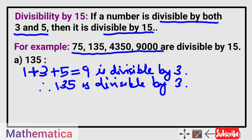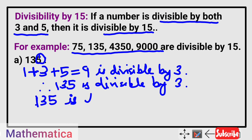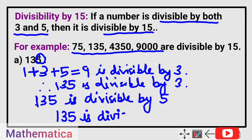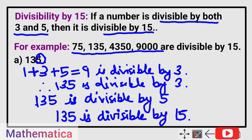And clearly the last digit of 135 is 5, so 135 is divisible by 5 because there is 5 at the unit place. So this number is divisible by both 3 and 5, therefore 135 is divisible by 15. Clear — it is divisible by both 3 and 5, therefore it is divisible by 15.